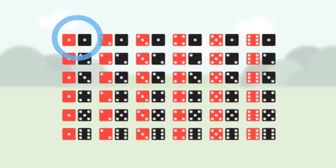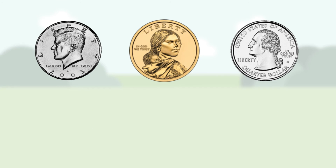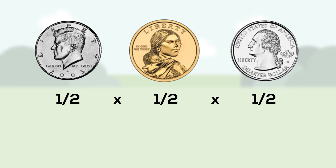Let's look at a second example. What's the probability of flipping heads three times in a row? It's the probability of the first flip landing heads, multiplied by the probability of the second flip landing heads, multiplied by the probability of the third flip landing heads — one-half times one-half times one-half equals one-eighth.